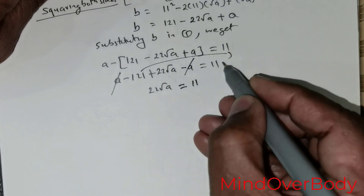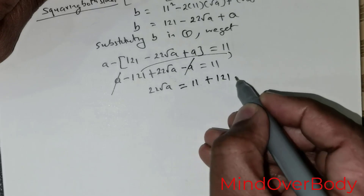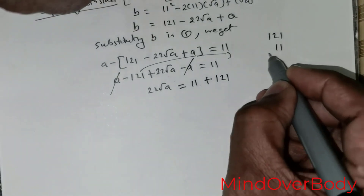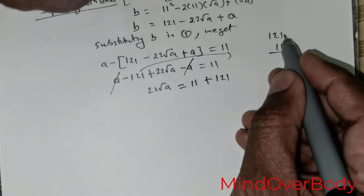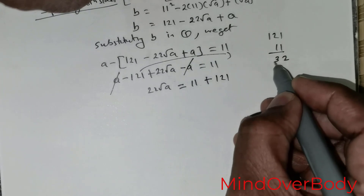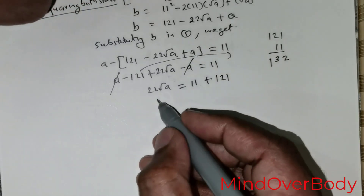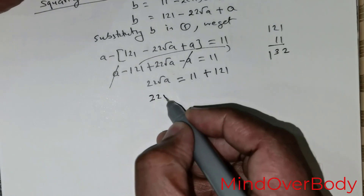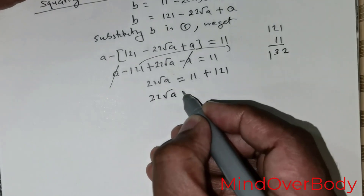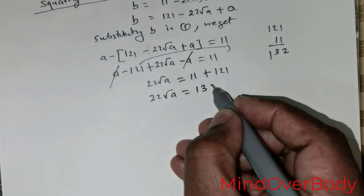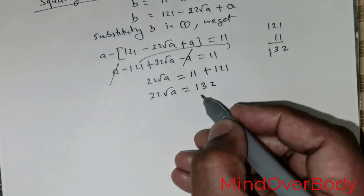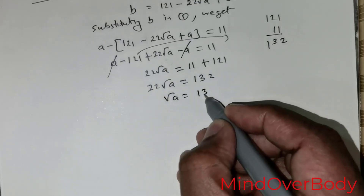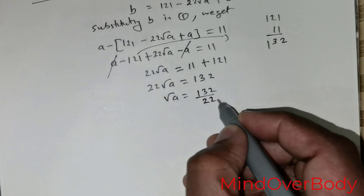I have got 22 times root of A. Moving the negative 121 to the other side gives positive 121. So 121 added with 11 gives 132. Therefore, 22 times root of A is equal to 132.